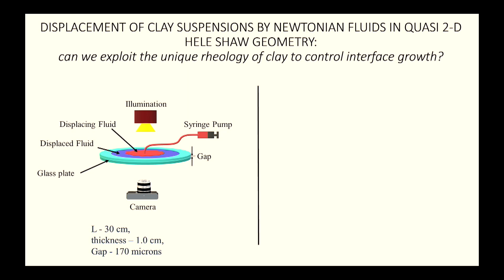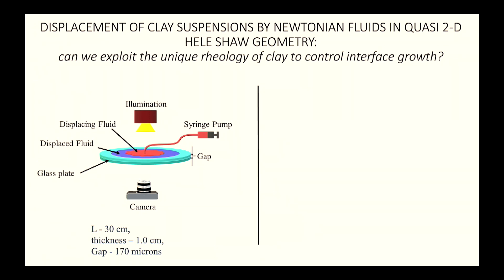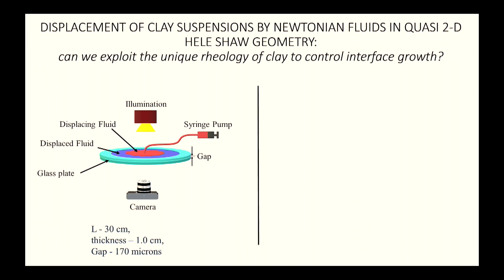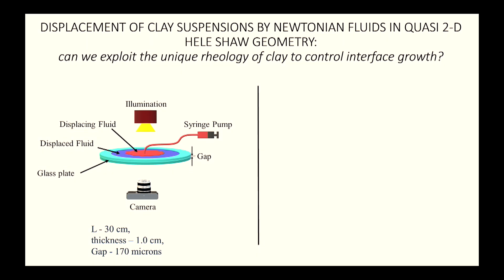The clay is first injected and then allowed to evolve for different waiting times across separate experiments, so each system has different degrees of elasticity. The displacing fluid is a Newtonian fluid — either water for the miscible case (zero interfacial tension) or mineral oil for the immiscible case (non-zero interfacial tension). The sample is illuminated from the top and imaged from the bottom with a high-speed camera.